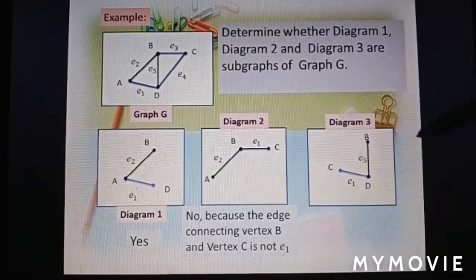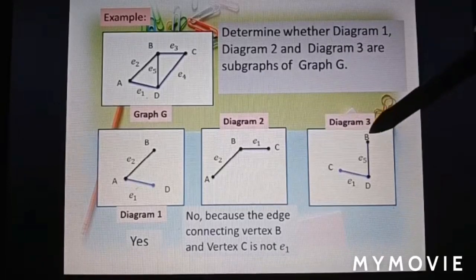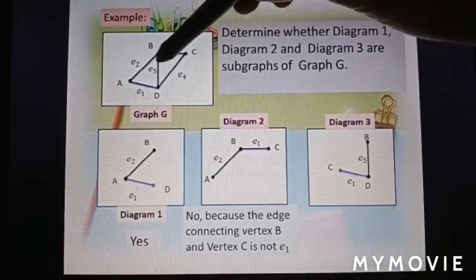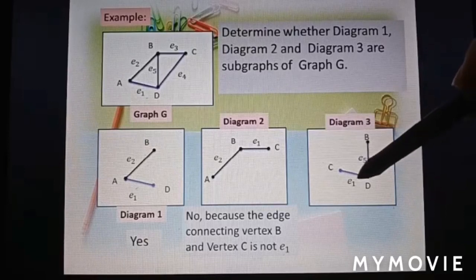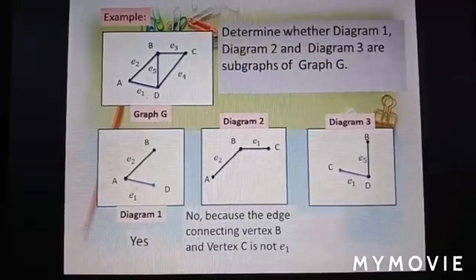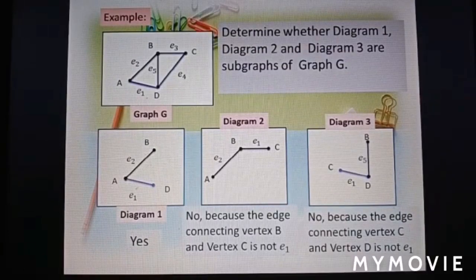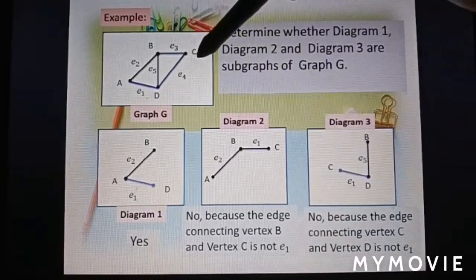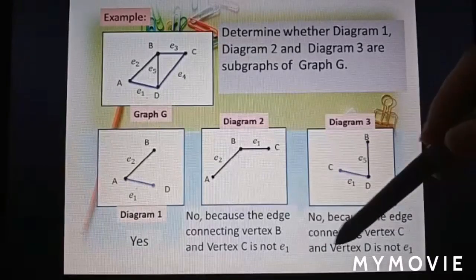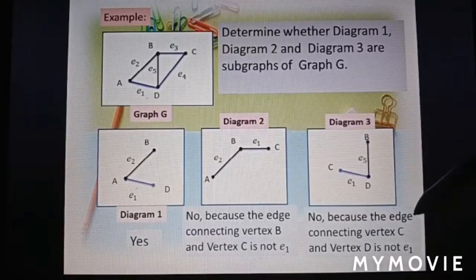Diagram 3: We look at BD, edge e5. CD is here, edge e4. So this is not a subgraph of graph G because the edge connecting vertex C and vertex D is not e1.